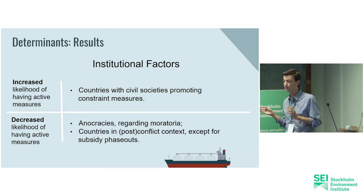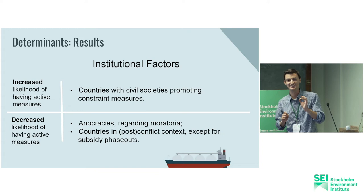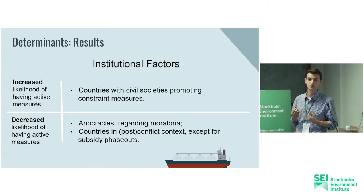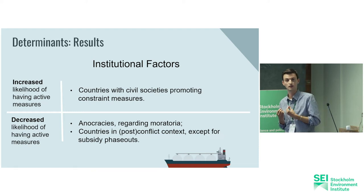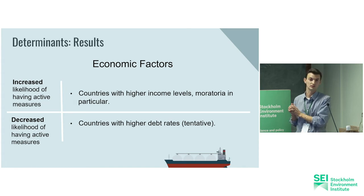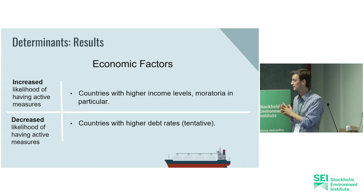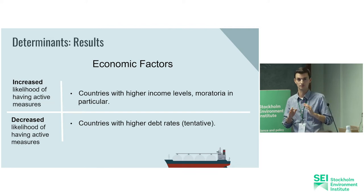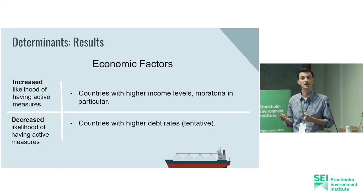Very interestingly, increased levels of corruption also indicate a higher likelihood of having an active measure. In terms of economic factors, richer countries are more likely to have active measures — more specifically for moratoria. Countries with higher debt rates are less likely to have active measures, though this is a more tentative result. We have also noted that foreign direct investment does not seem to have an impact either way.